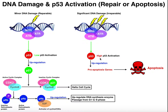When p53 becomes overstimulated — super high activation — instead of upregulating p21, it will also upregulate pro-apoptosis genes. These are genes such as BAD and BAX — you can look at them in any immunology or biochemistry textbook. These genes, once they're transcribed and translated, ultimately promote apoptosis and you get cell death.